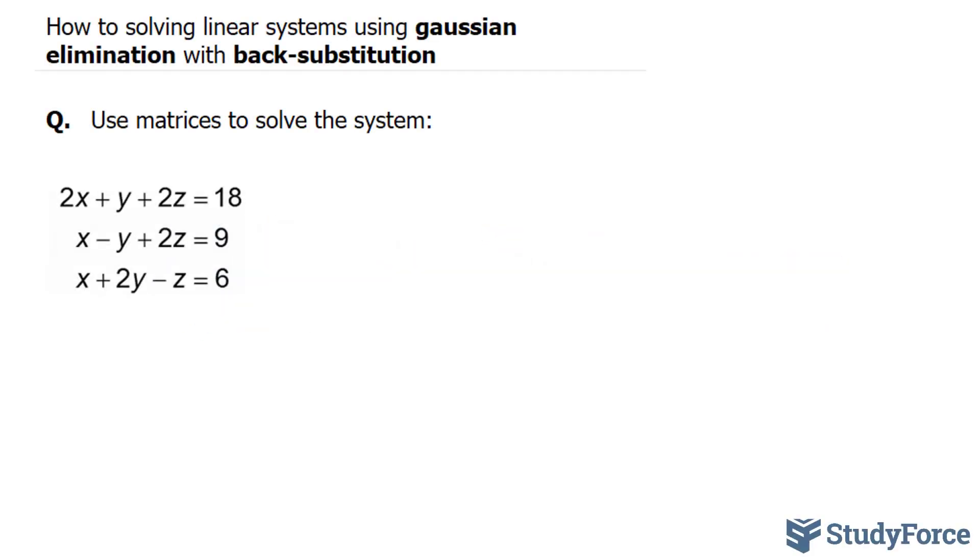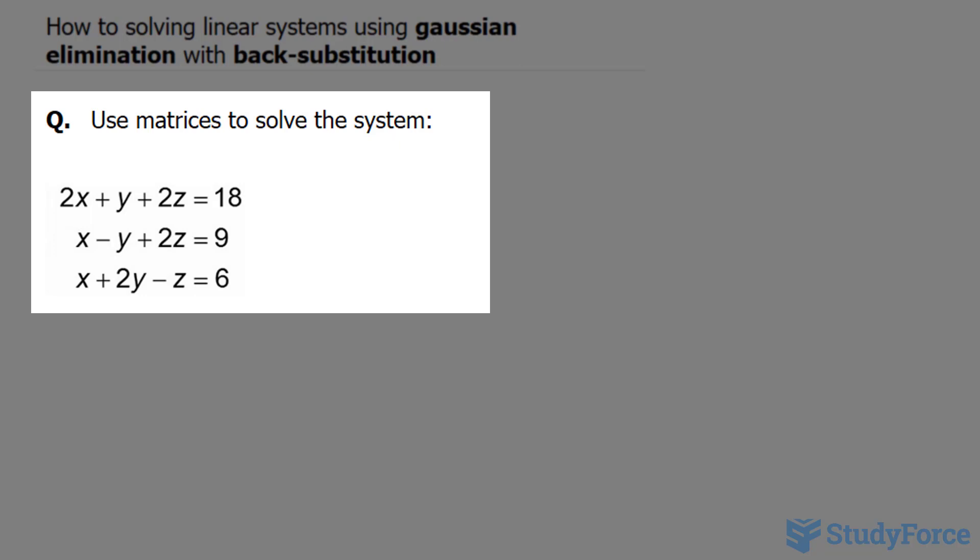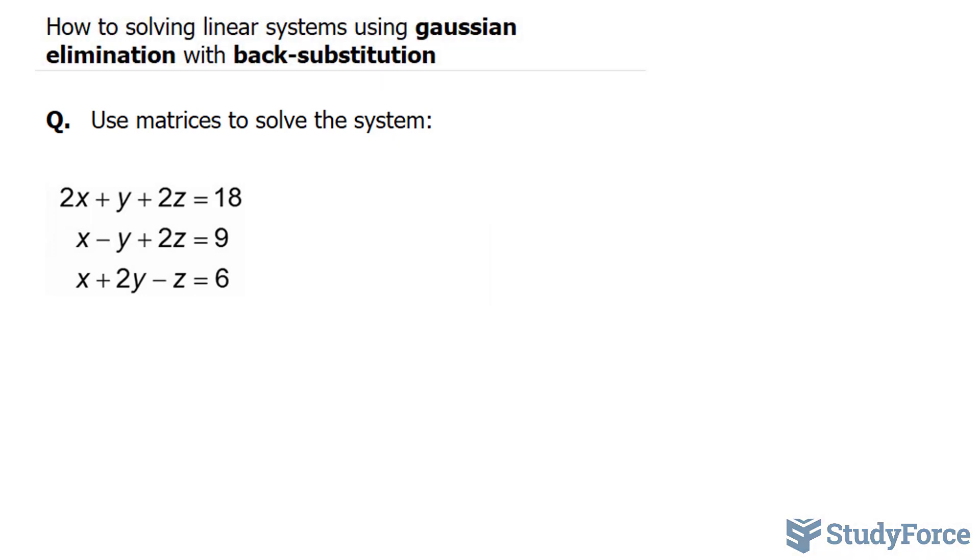In this lesson, I'll show you how to solve linear systems using Gaussian elimination with back substitution. The question reads, use matrices to solve the system. As you can see, we have a system of three equations and three unknowns. The unknowns are x, y, and z.